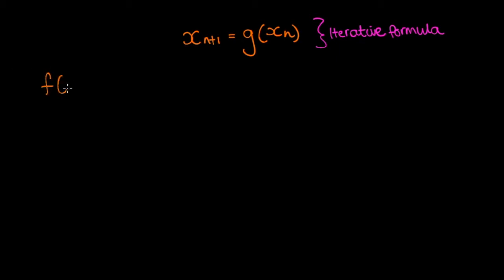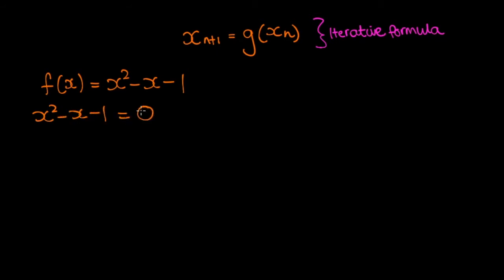Let's say that we have a function f(x) = x² - x - 1, and we need to find the roots of this function using the iteration method. The first thing we should do is set f(x) equal to 0, so x² - x - 1 = 0. Although we can use the quadratic formula or completing the square to solve this, there are going to be cases where we may have to use numerical methods, so let's try to ignore the fact that we can solve this algebraically.